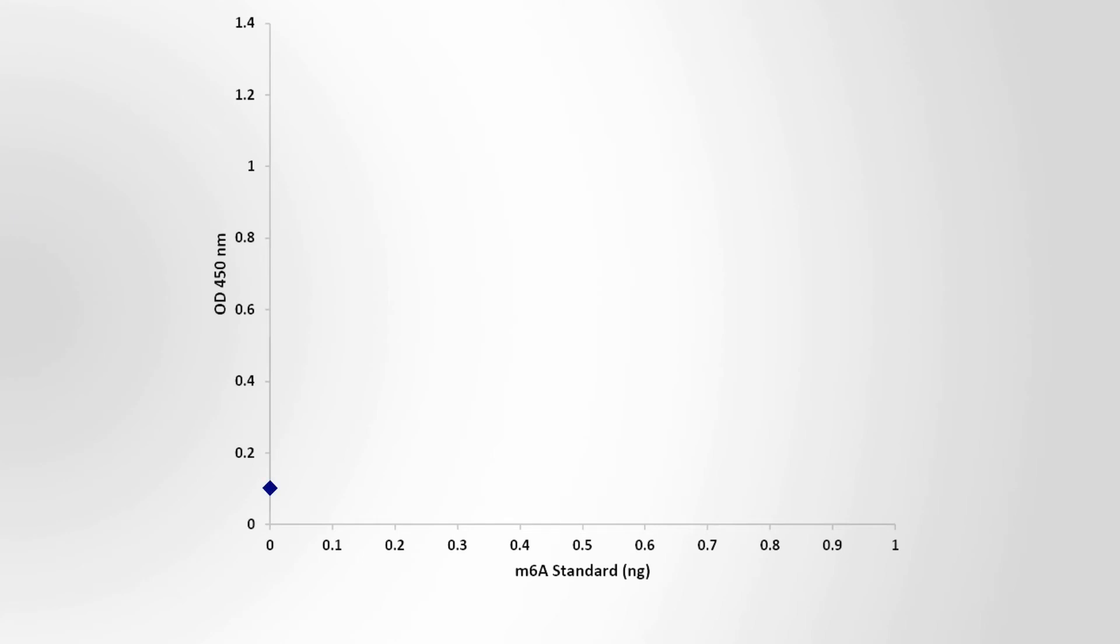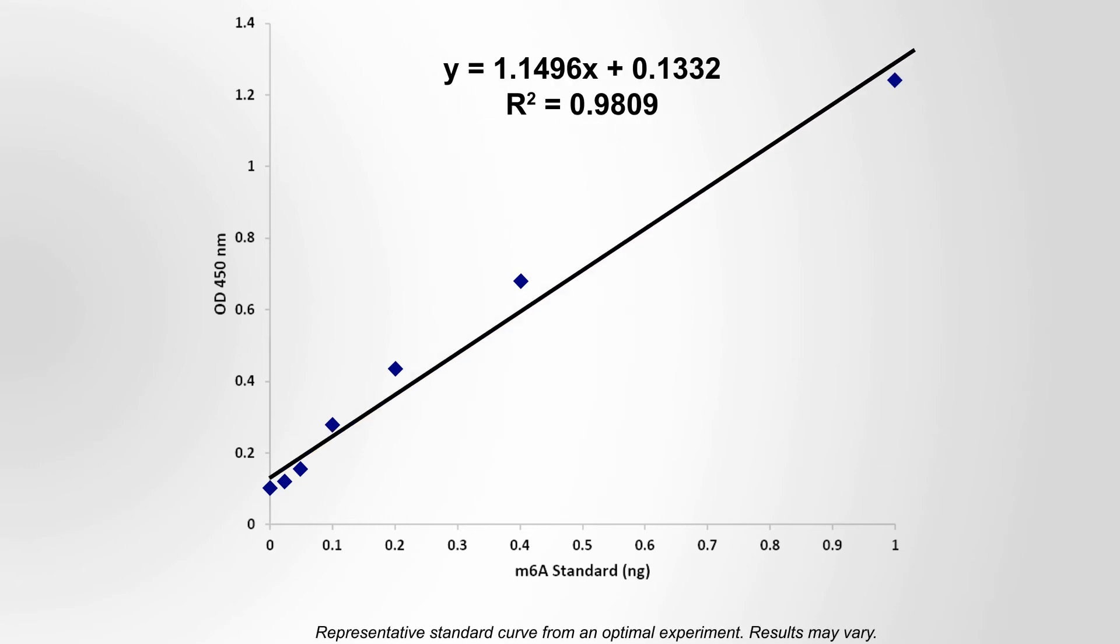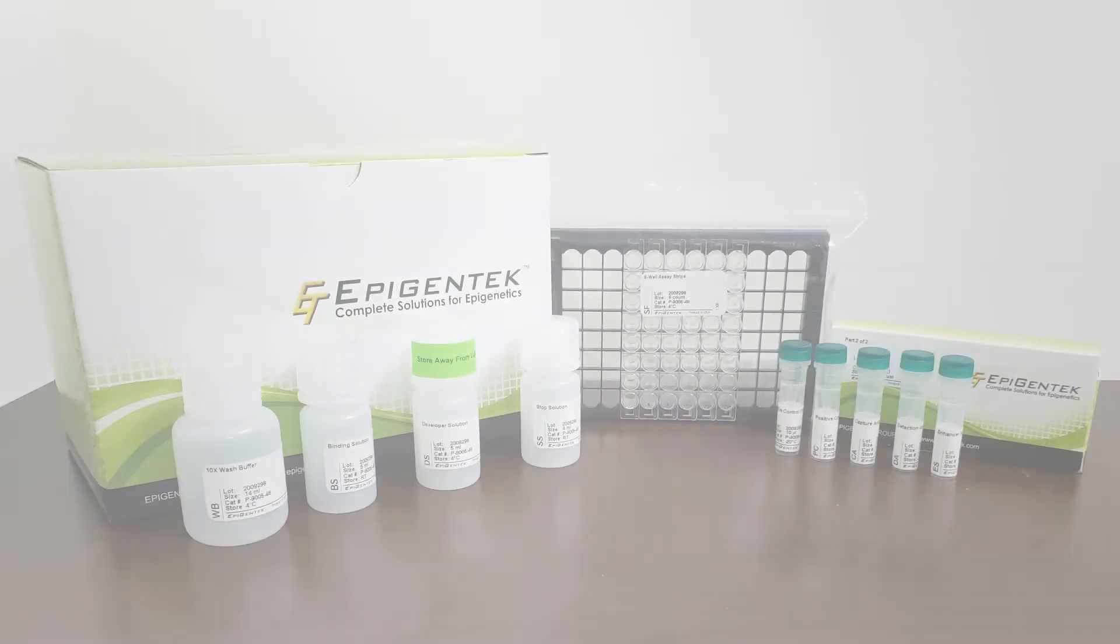Generate a standard curve by plotting the optical density values versus the concentration of positive control standard. Use the equation of the best fit trend line to calculate sample M6A RNA levels.